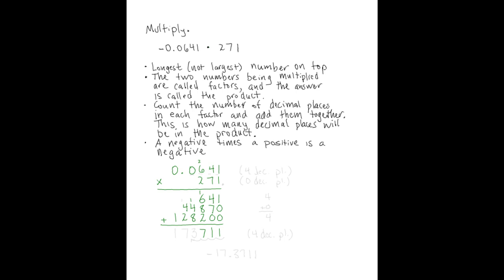I'll write that 7 and carry a 1. 4 and 8 are 12, plus the carried 1 gives me 13. I'll carry a 1 again. 4 and 2 make 6, plus the carried 1 is 7. Nothing to carry this time, so I just bring down the last 1.